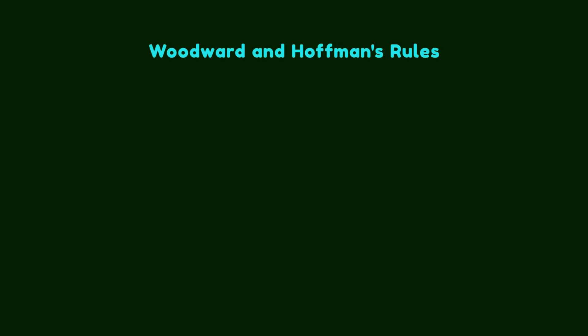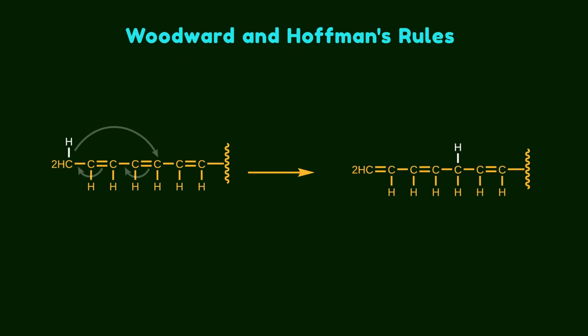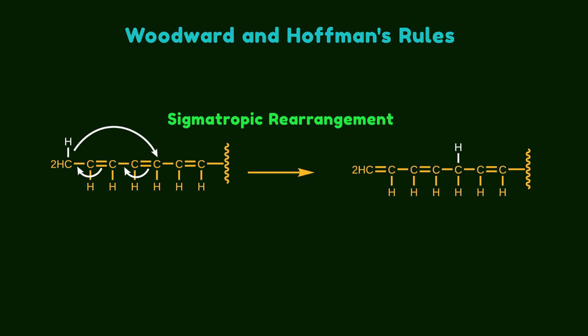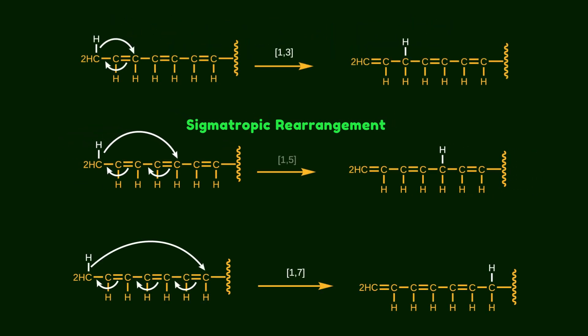The essence of migrating groups in organic chemistry goes back to Woodward and Hoffman's theory. According to the theory, a substituent moves from one part of the pi system to another part with simultaneous rearrangement of the pi system. This is also called a sigmatropic rearrangement. Actually, there are 3 classic types of migration, named 1-3, 1-5 and 1-7 sigmatropic rearrangements.